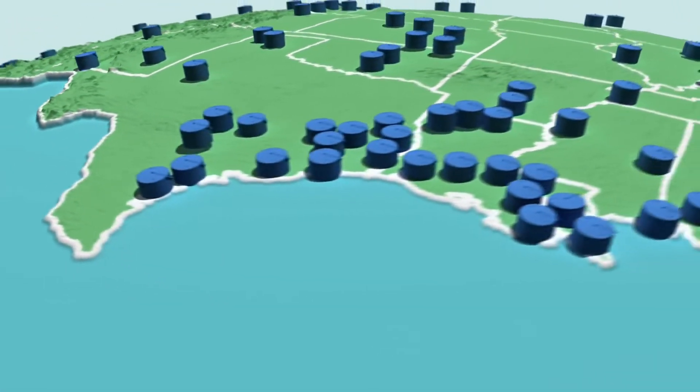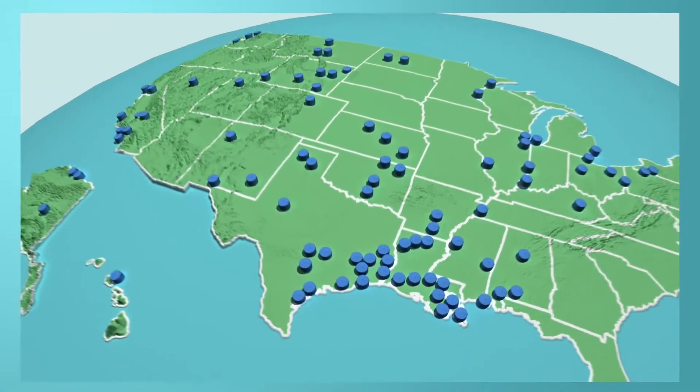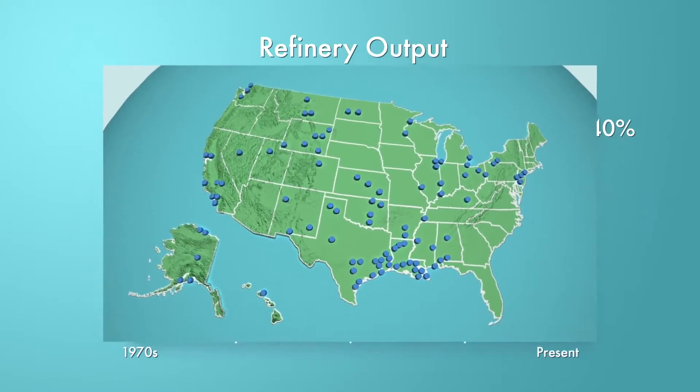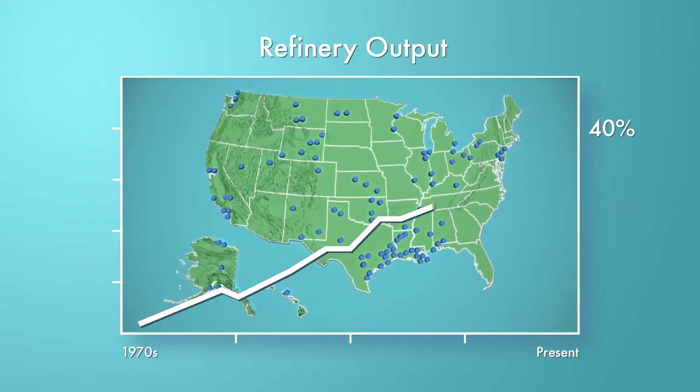In fact, by expanding existing refineries and improving their efficiency, we've increased production of refined products by more than 40 percent since the 1970s.